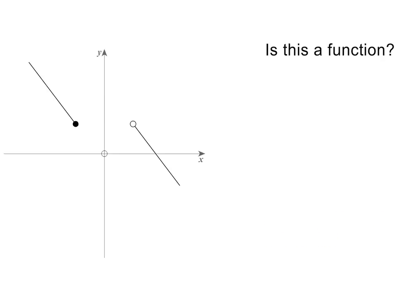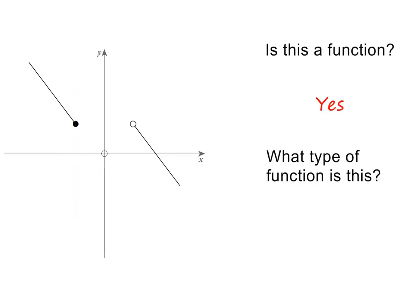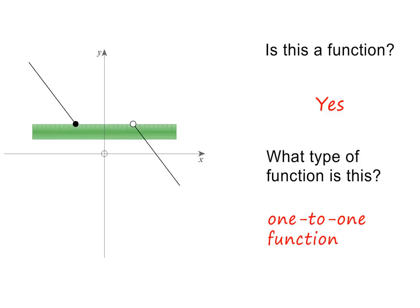In the next example, we are given a graph with a break in it. Is it a function? If we use the vertical line test, it is clear that the ruler will only ever cut the graph once. So yes, it is a function. But what type of function is it? If we move a horizontal ruler across the graph from top to bottom, it will only ever cut the graph once. Please note, the empty circle tells us that the point is not included on the graph. This is therefore a one-to-one function.